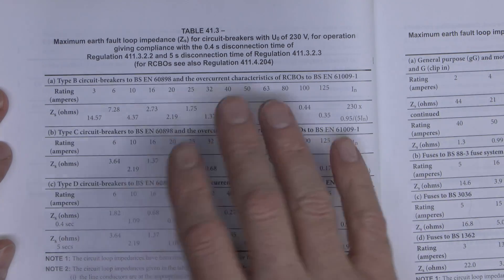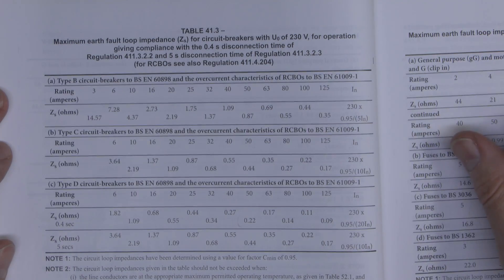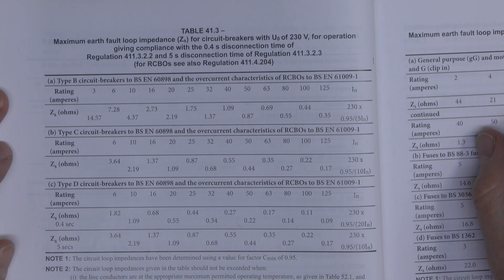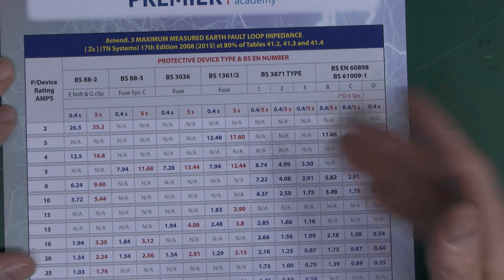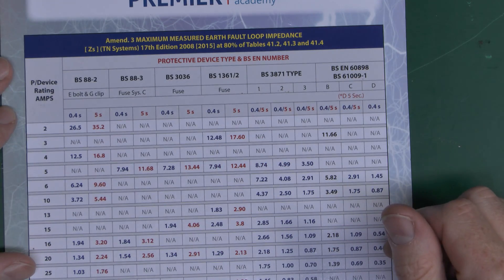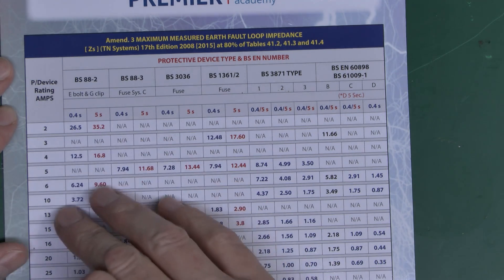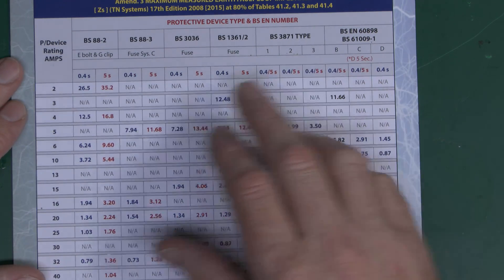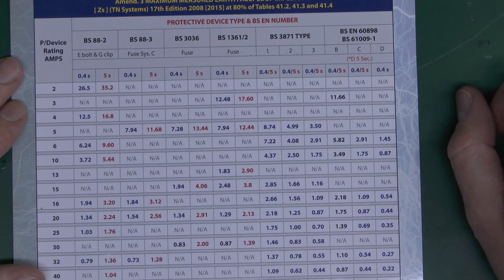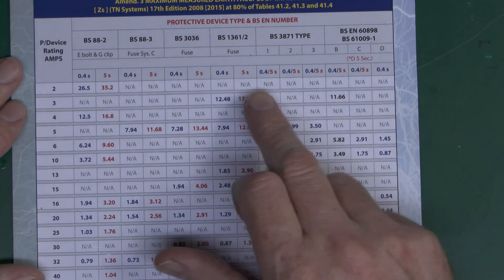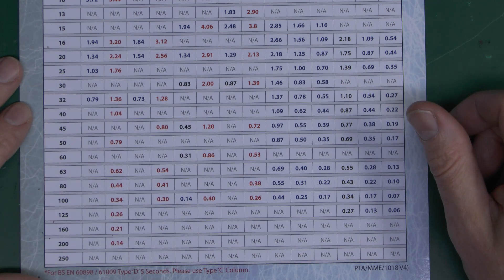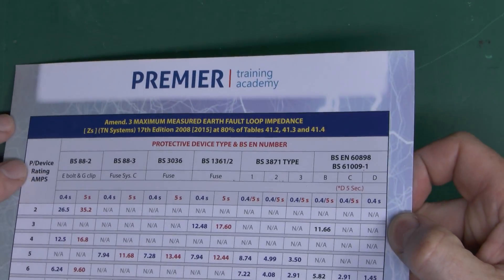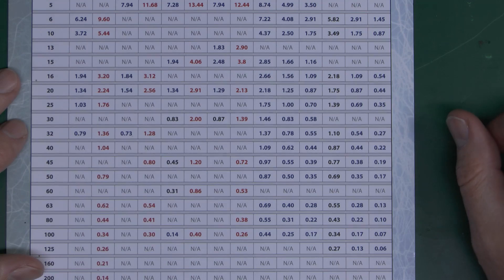This says in BS7671 and there's various other tables and things as well for different devices. What you can also get are things like this where it's basically a printed chart, and it's a similar kind of thing. You've got your ratings down the side here in amps, various different types of devices, so fuses and circuit breakers of various types and styles, and you've got the various disconnection times along the top. Now all of these are written in here for you, and there's obviously quite a lot of non-applicables because some things aren't simply available in those values, and you can get these from various places.